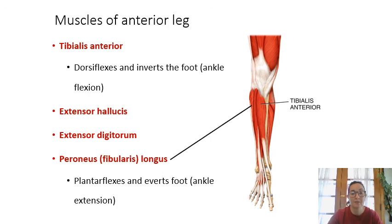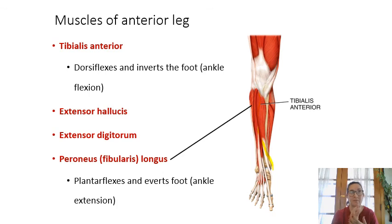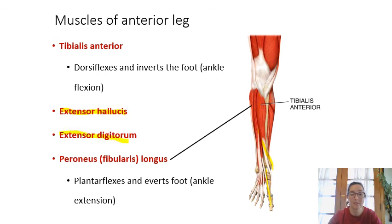For the lower leg: tibialis anterior runs along the anterior aspect of the tibia. The anterior leg also has extensor muscles — extensor hallucis extends the big toe, and extensor digitorum extends all the other toes. Fibularis longus is the long muscle on the fibula side and is important for eversion of the foot.